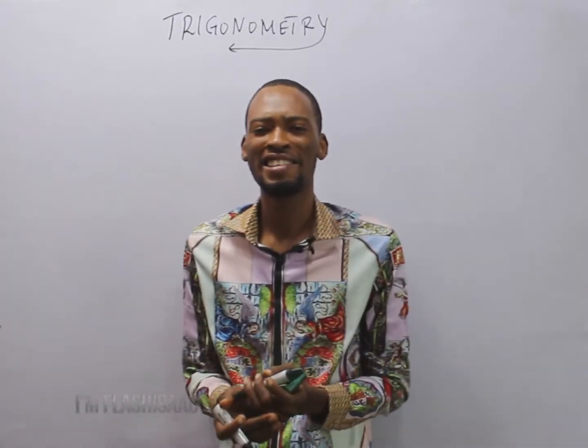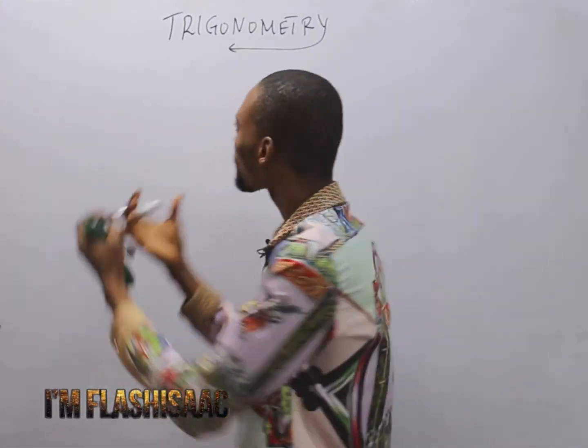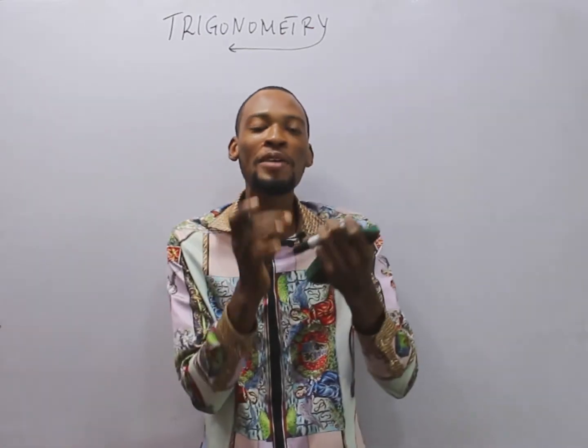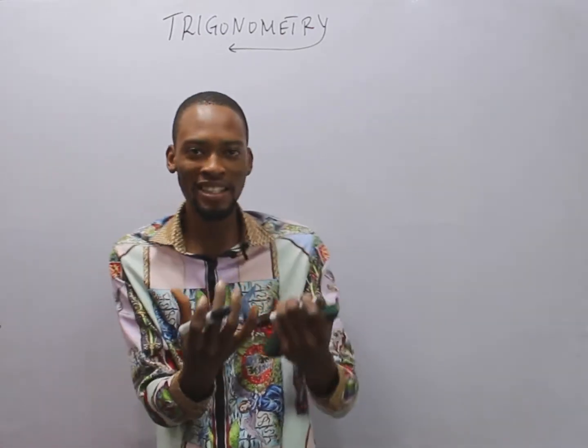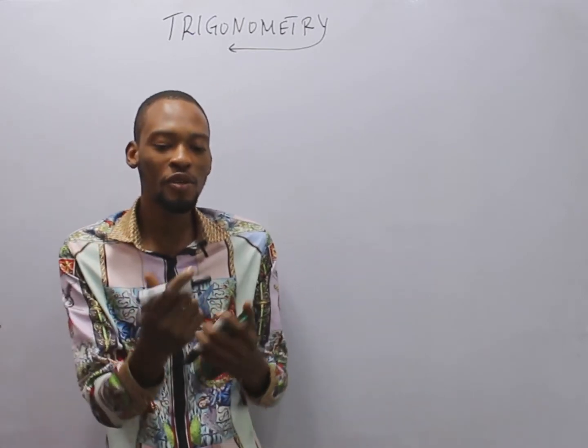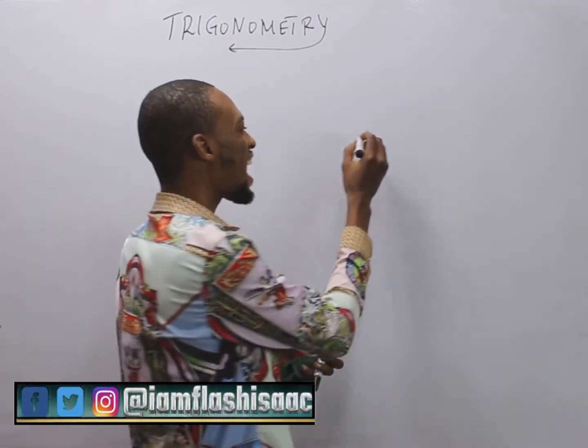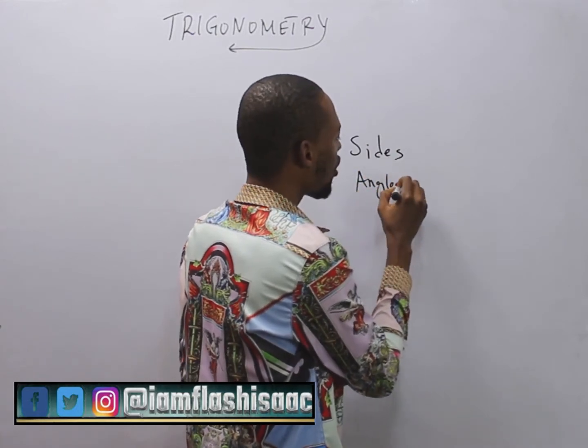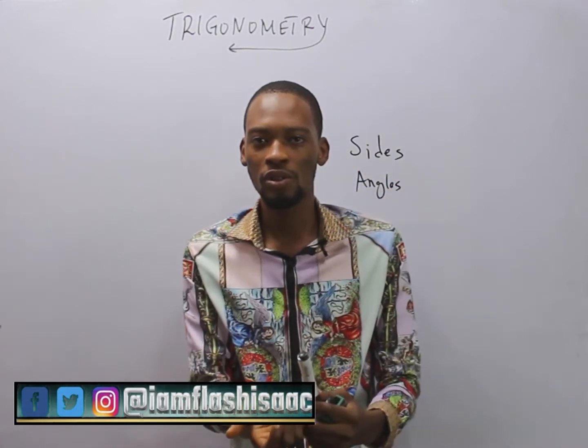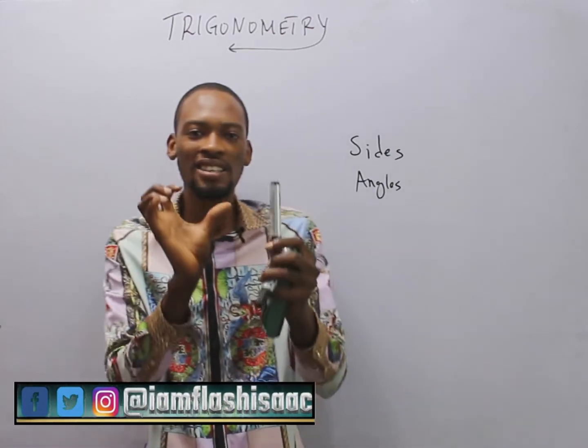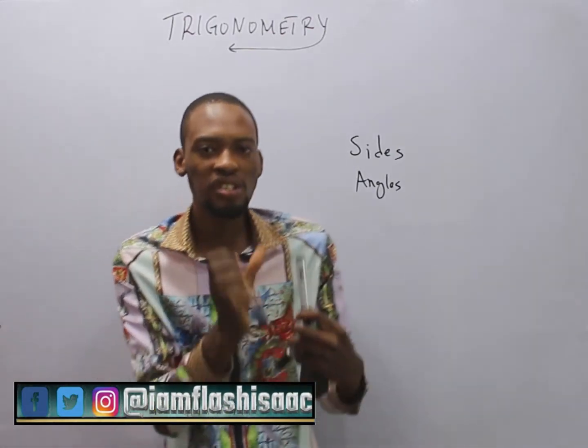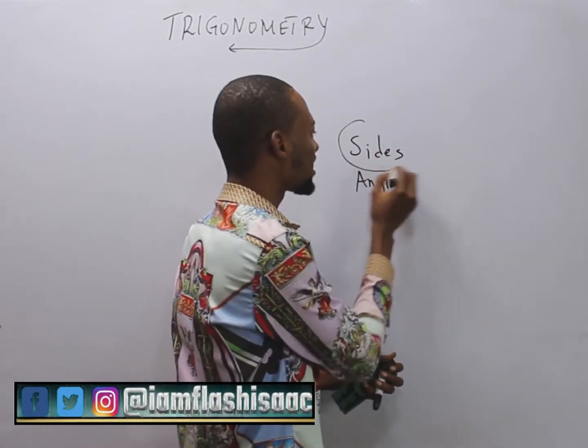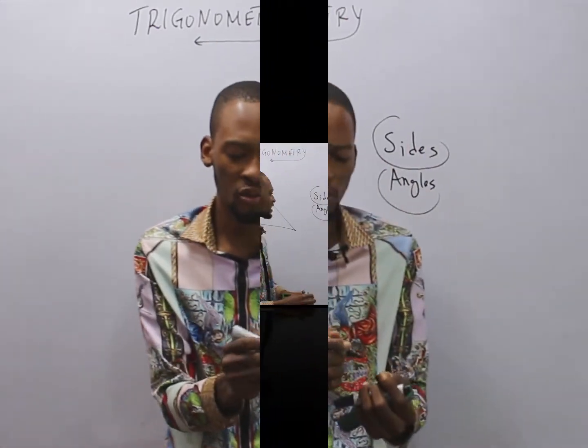I am Flash Isaac and today I'll be taking you through trigonometry. Trigonometry is simply a branch of mathematics that deals with the ratio of the sides and angles of a triangle. This shows that trigonometry deals with triangles and we are concerned about the sides and angles of triangles.